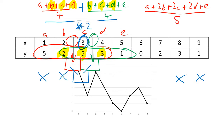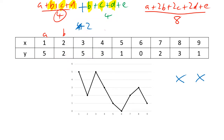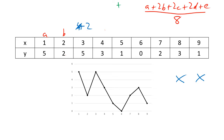The combined formula is: a + 2b + 2c + 2d + e, all divided by 8 — because we've got four plus four, that's eight numbers. So that's what we're going to be relying on every time we do this. Let me erase all this and show how it all works.